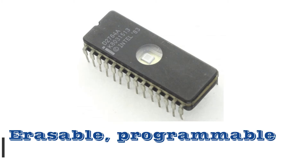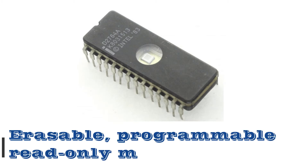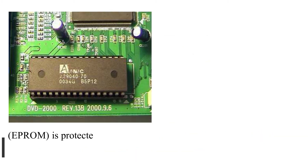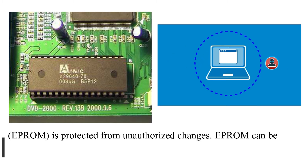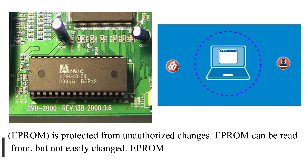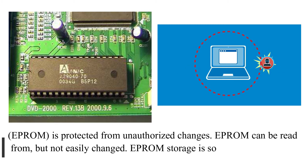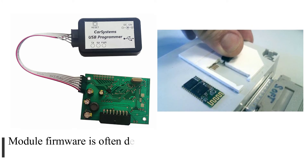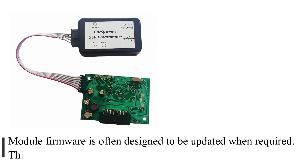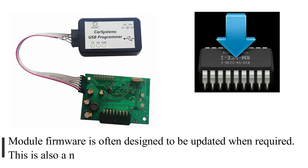Erasable Programmable Read Only Memory (EPROM) is protected from unauthorized changes. EPROM can be read from, but not easily changed. EPROM storage is sometimes referred to as firmware. Module firmware is often designed to be updated when required. This is also a non-volatile memory type.